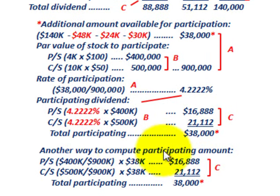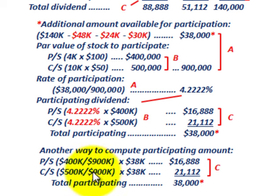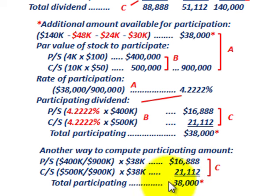There's also an easier shortcut method. For preferred stock: take its par value of $400,000 divided by the total par value of $900,000, then multiply by $38,000 — you get $16,888. For common stock: $500,000 divided by $900,000 times $38,000 equals $21,112. Same results as the rate of participation method, and the two amounts add up to the total of $38,000 to be allocated.